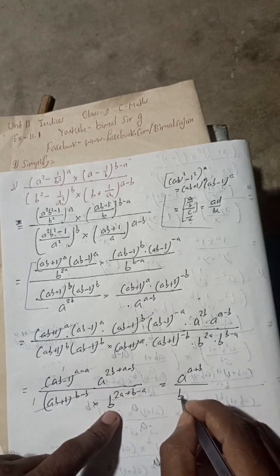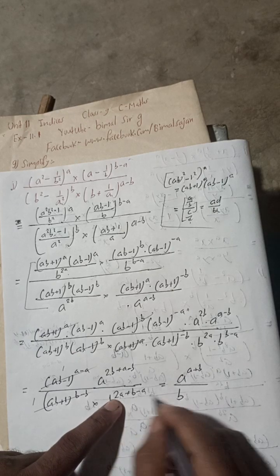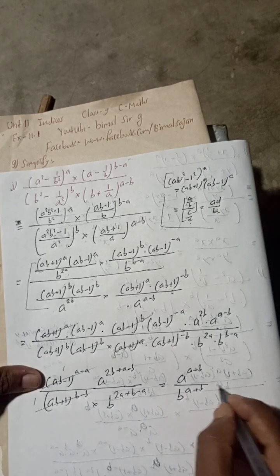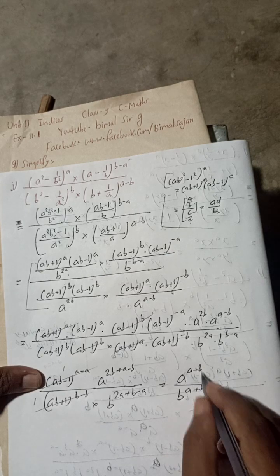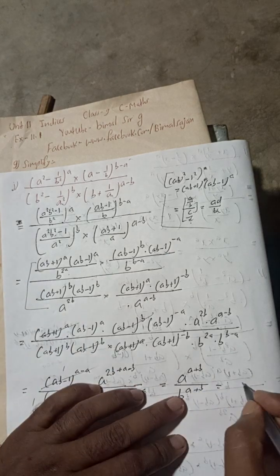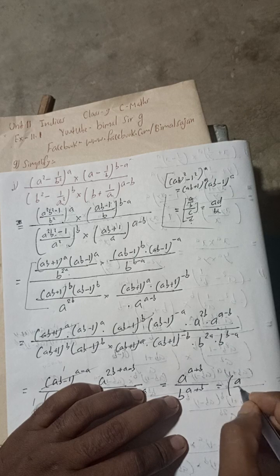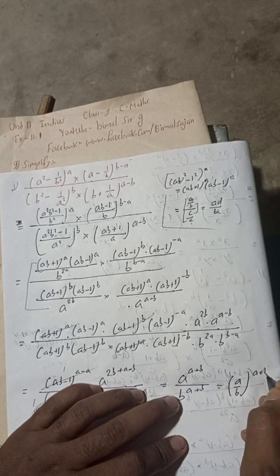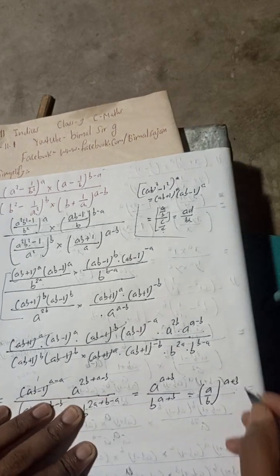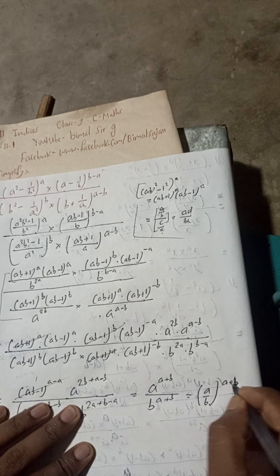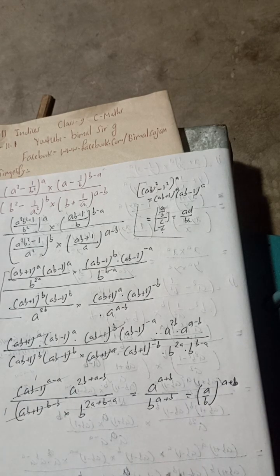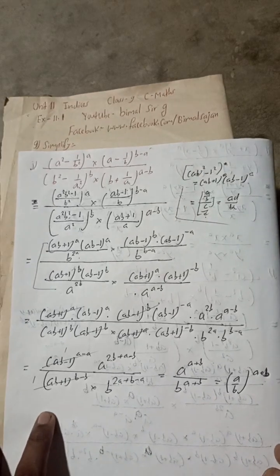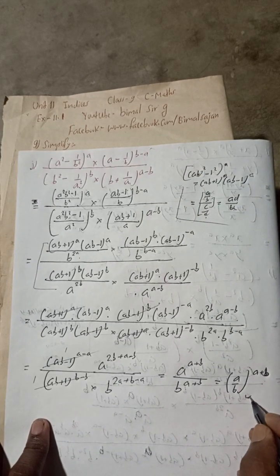So we have a to the power (a+b) and b to the power (a+b). Since the power is the same, we can combine: (a/b) to the whole power (a+b). So (a/b)^(a+b) is the required solution of this question.